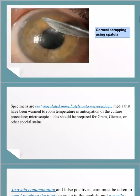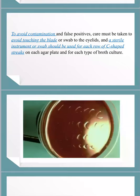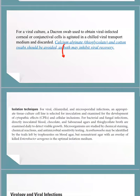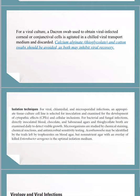The spatula is used for scraping, and a sterile instrument should be used for each row of C-shaped inoculation on the culture plate to avoid contamination. Importantly, calcium alginate swabs are not preferred, and cotton swabs should be avoided in cases of suspected viral infection — such as herpes, dendritic ulcers, or adenoviruses — because they may inhibit viral recovery.